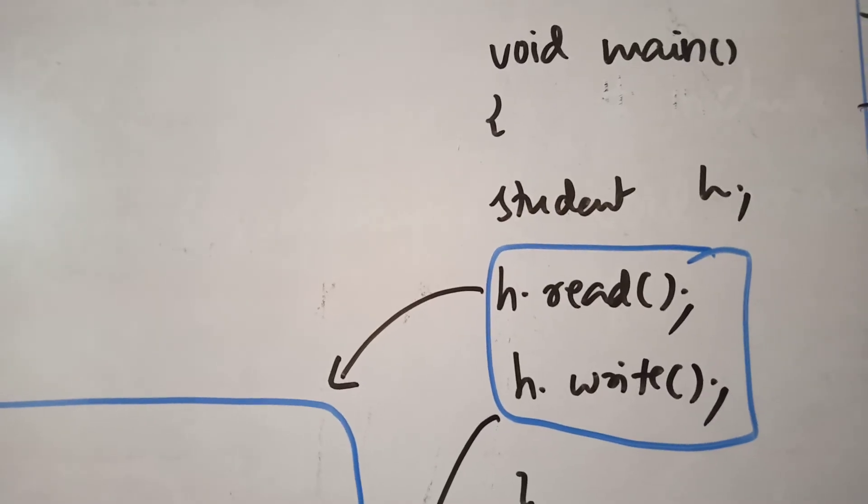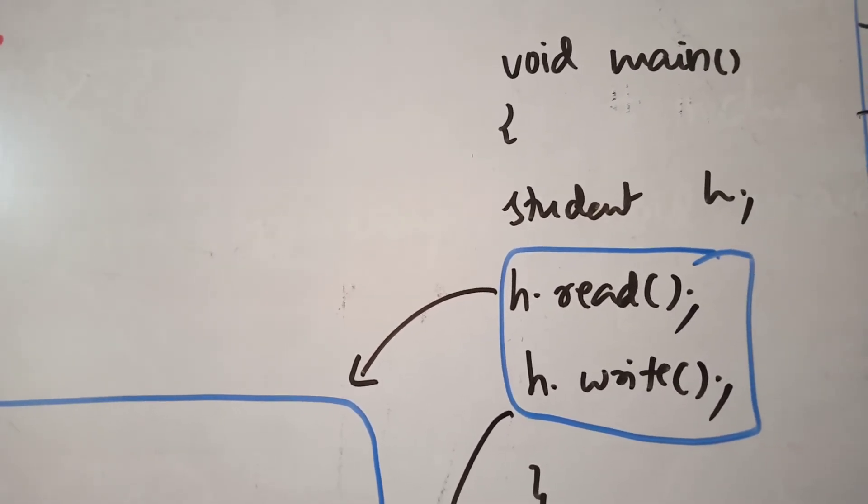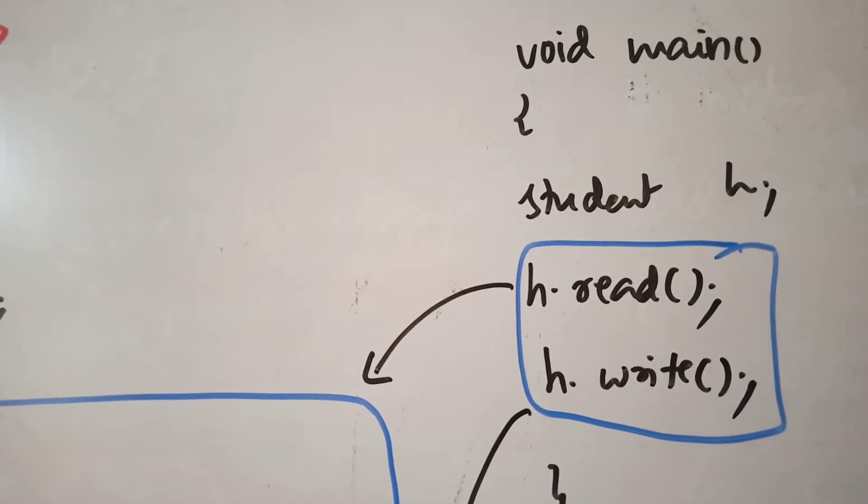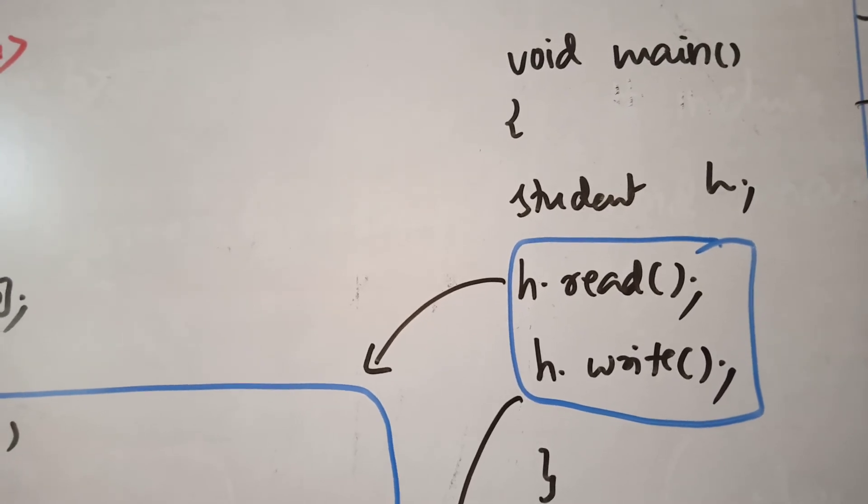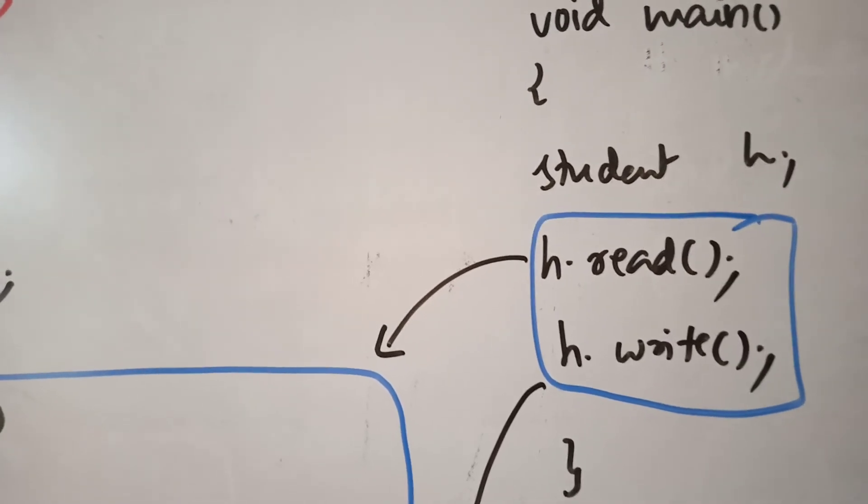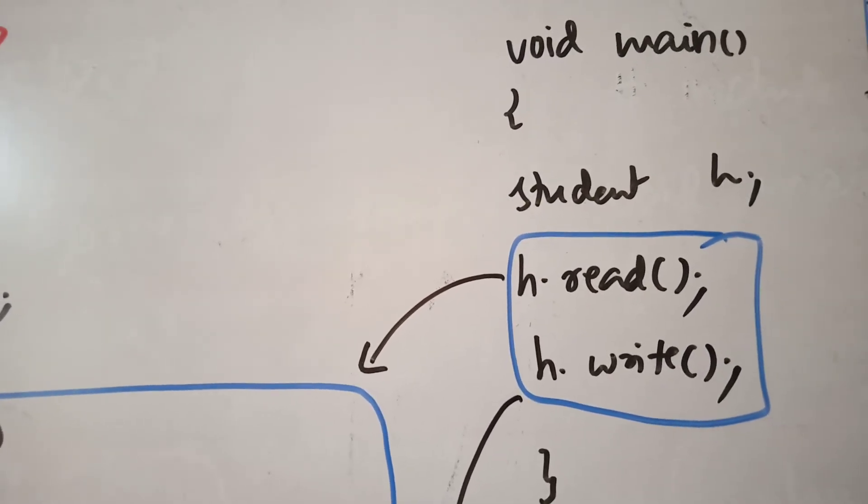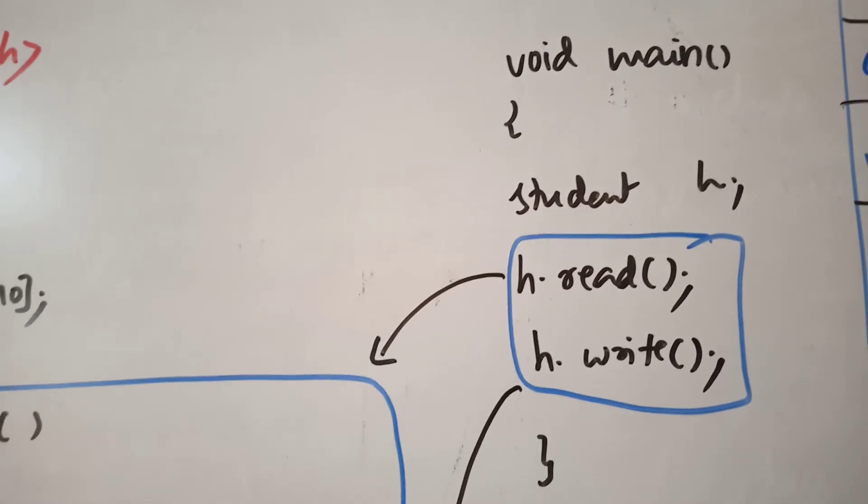So in the main program we create the object, and here object is h. And the member functions must be called with the help of the object in the main program, h.read and h.write. Once a function is called automatically the control will be transferred to the definition part of the function. You can see the arrow marks there.